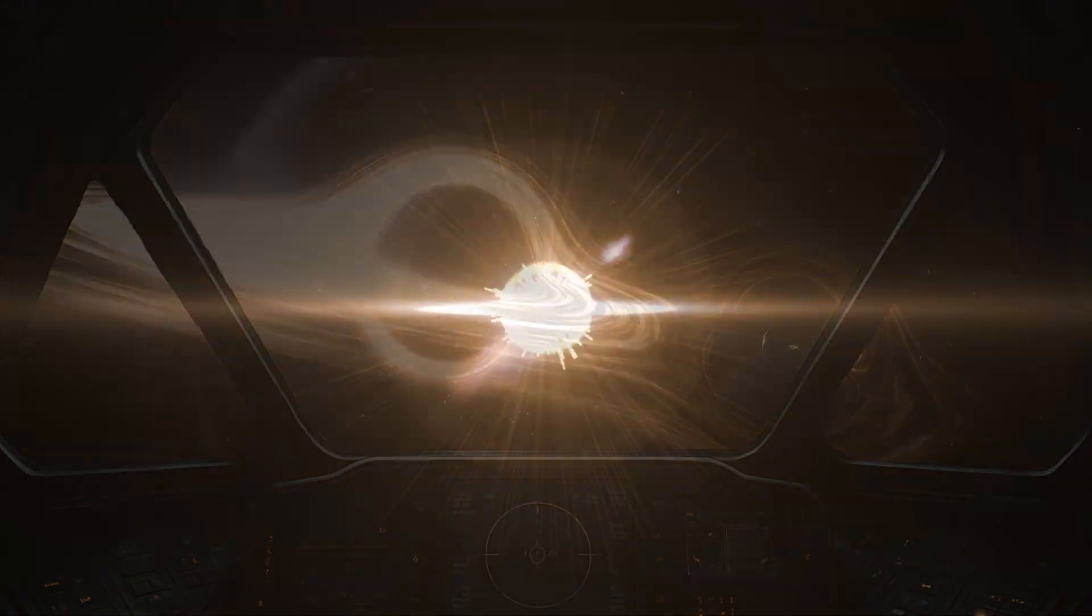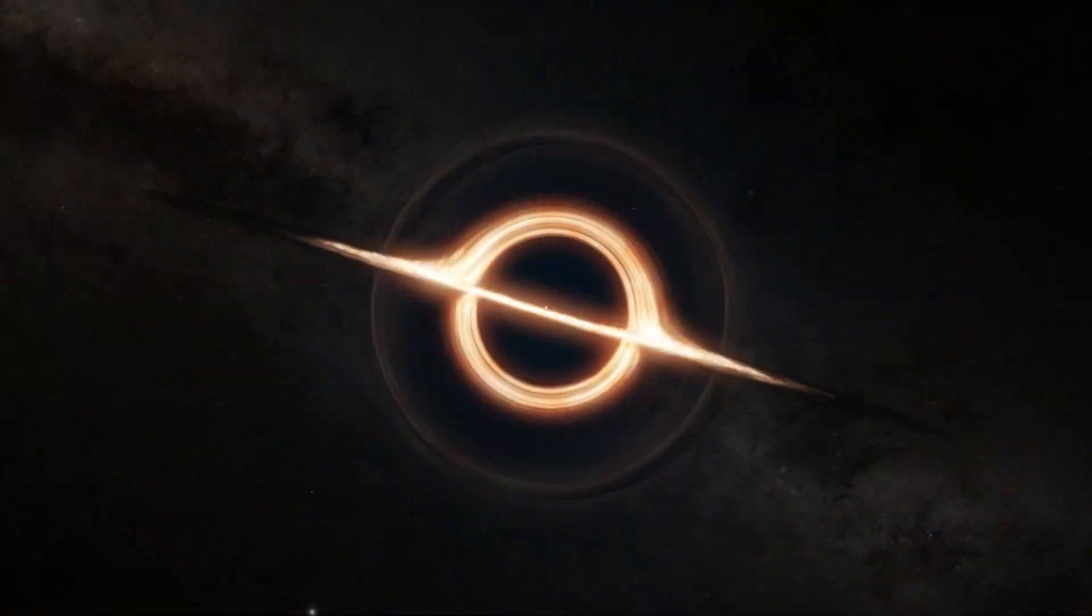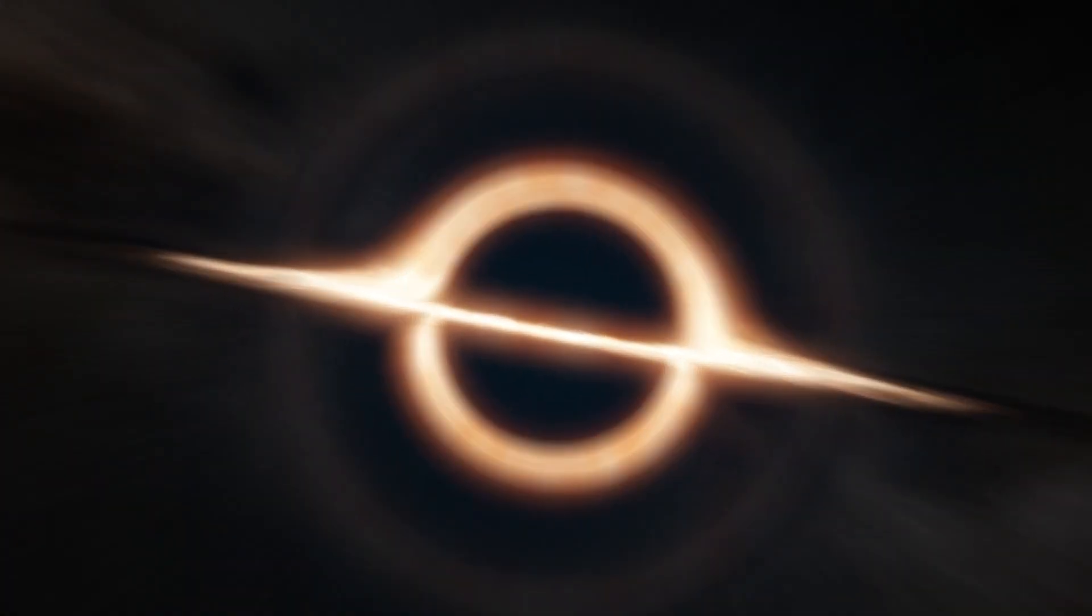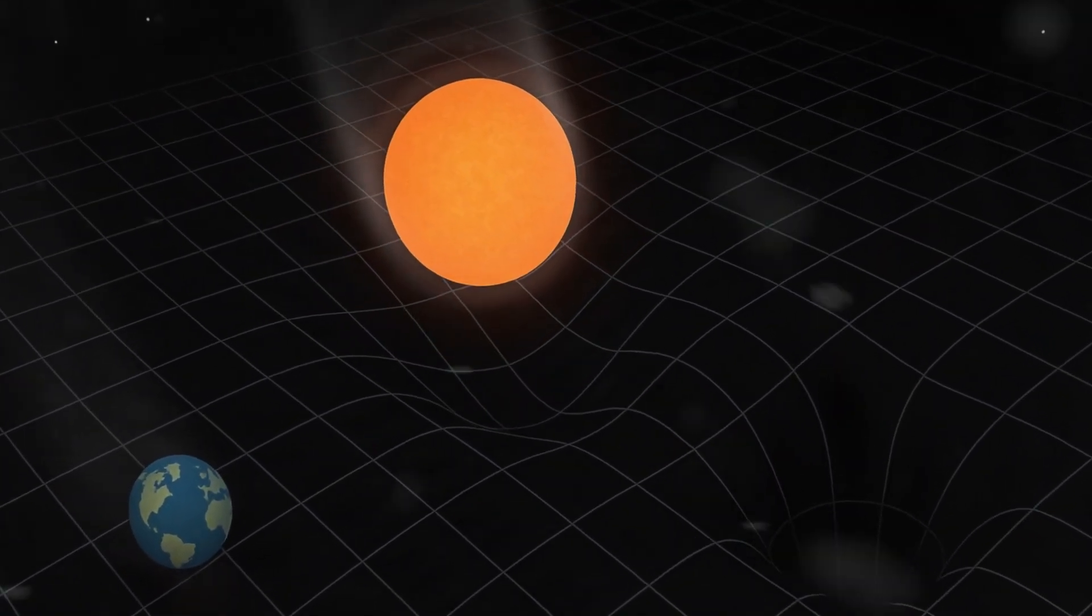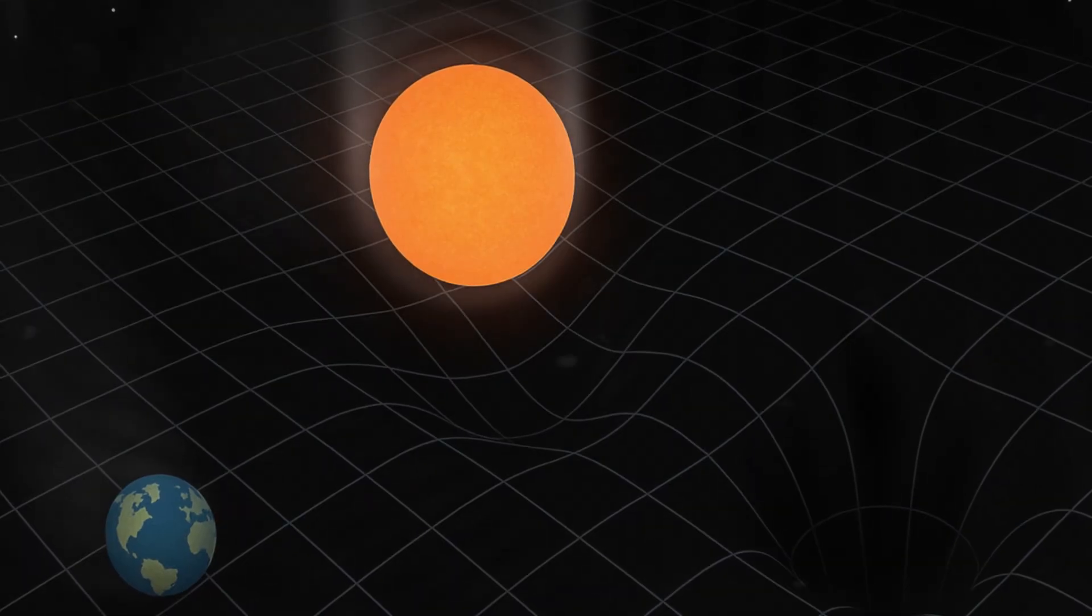For decades, astronomers thought of them as objects that form when matter collapses under gravity until no force can stop it. But some physicists argue that what we call a black hole might not be a dead end. Instead, it could be something very different: a wormhole.